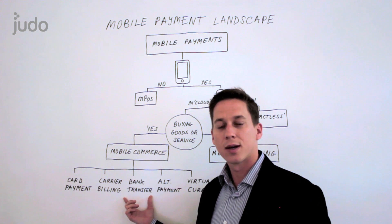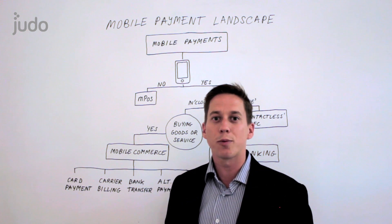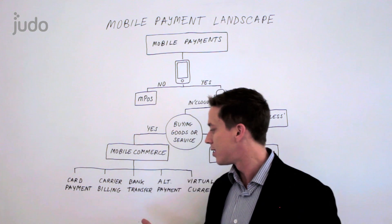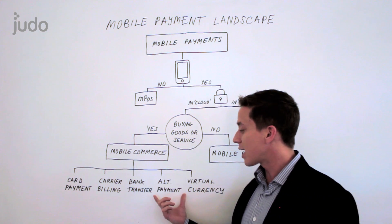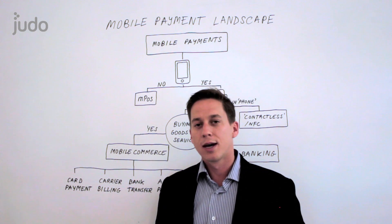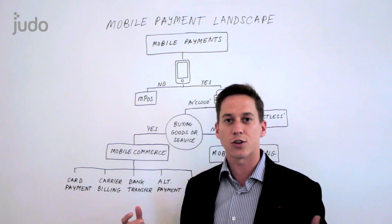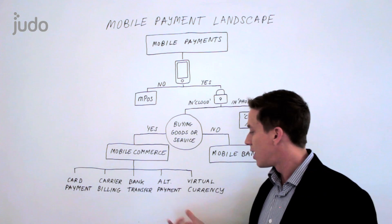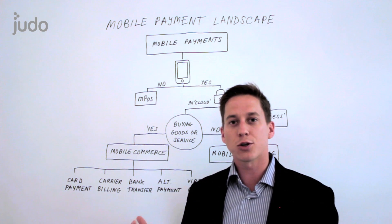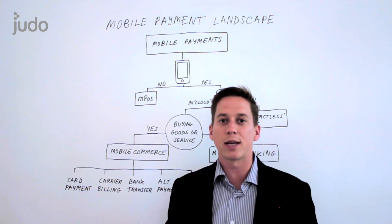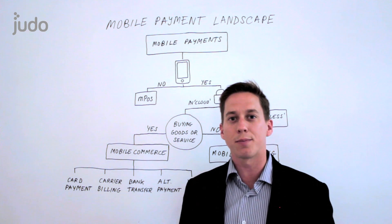Next we have bank transfer. In the US that's ACH. In continental Europe that's things like iDEAL. Coming soon in the UK you'll be able to use faster payments pretty easily. There's also Pingit, which could be considered bank transfer but can also be considered mobile banking. Next we have alternative payment methods — the most well known being PayPal — which involves making a payment with a different account login structure. And finally, a big discussion point right now is virtual currencies, something like Bitcoin, which is not tied to any bank or currency — it's a separate creation of a currency that can be used to purchase things.